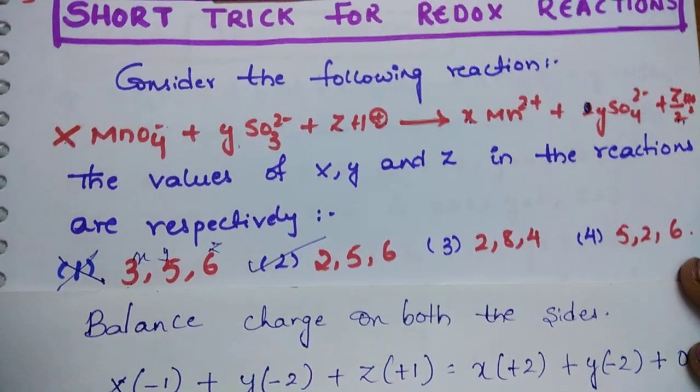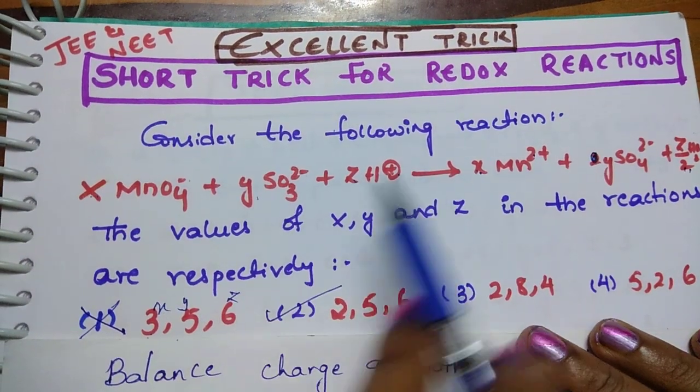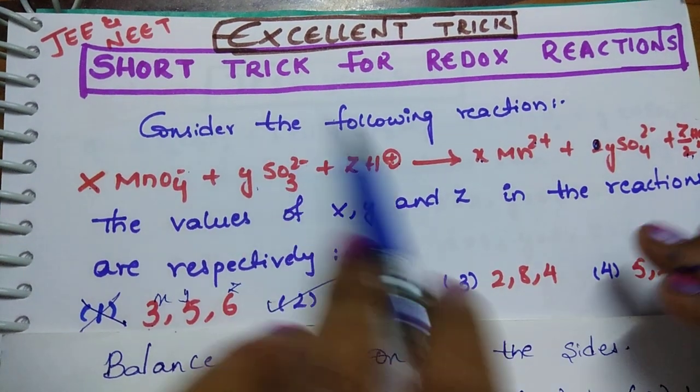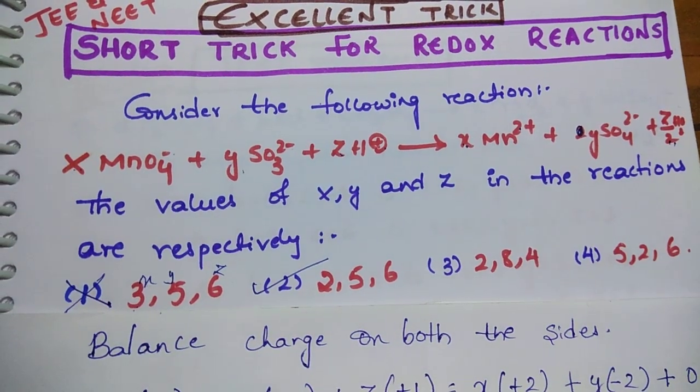Once I am repeating the trick. This is your correct option. What you do is just take the charges and balance charges on both the sides and get the relation. After getting the relation, just substitute the options. If you practice, less than a minute you can do this trick.